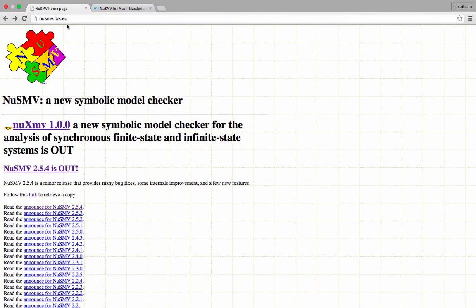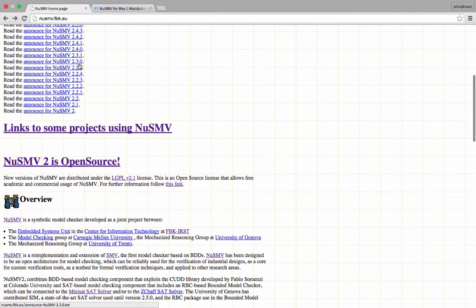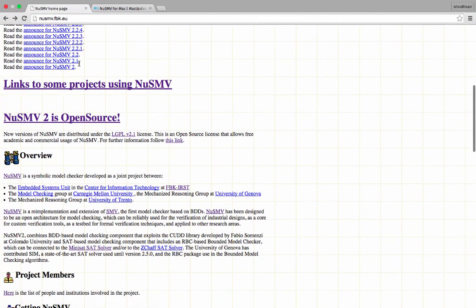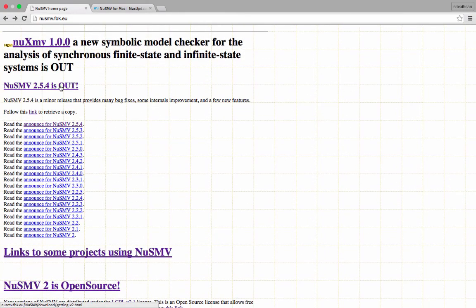I will now give you the websites from where you can download and install NuSMV. Go to this webpage nusmv.fbk.eu. In this webpage, you will find a lot of details about NuSMV. To install, click on this link, NuSMV 2.5.4.